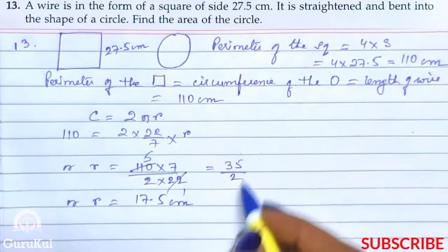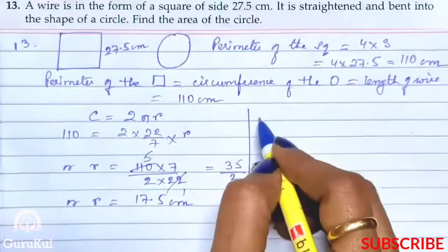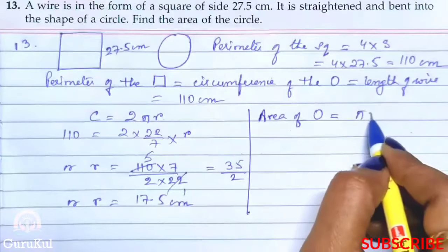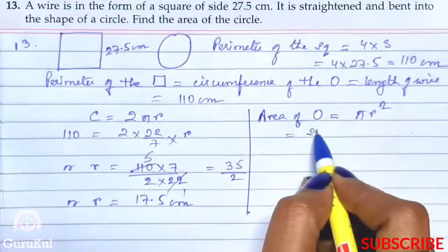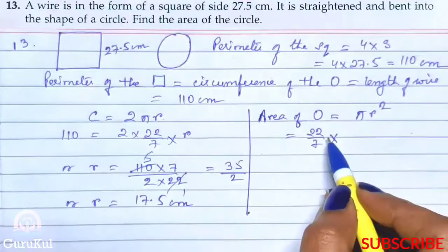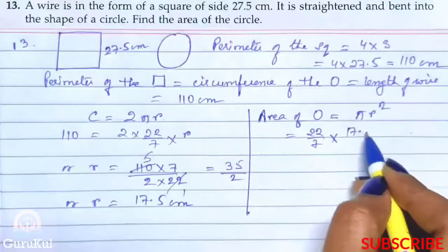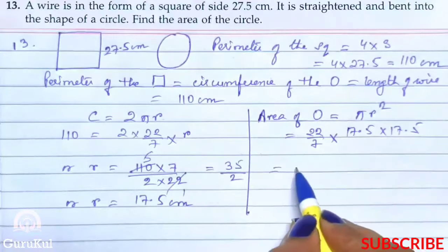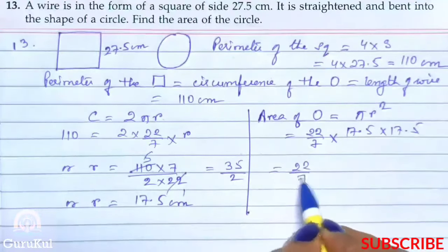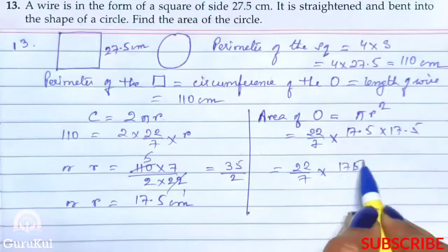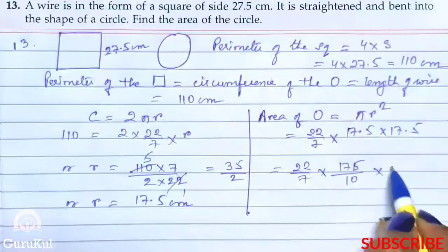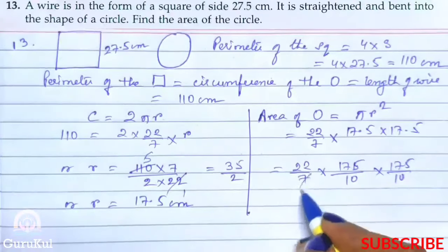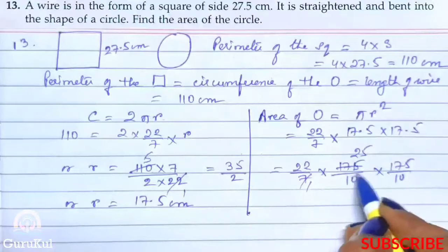Now we have to find the area of the circle. So area of the circle is equal to πr². So 22 by 7 into 17.5 into 17.5. So 22 by 7 into decimal removed, so we have got zero. So 7 ones are, and 7 twenty-fives are 125.